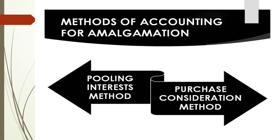We have studied the types of amalgamation — amalgamation in the nature of purchase and amalgamation in the nature of merger. Now, there are two methods of accounting for amalgamation: the first is the pooling of interests method, and the second is the purchase consideration method — when you acquire somebody's business, you give some amount of remuneration or purchase consideration in return.